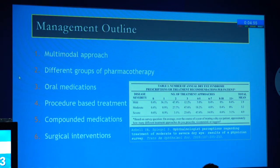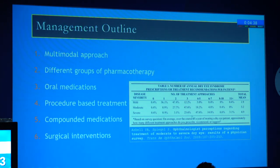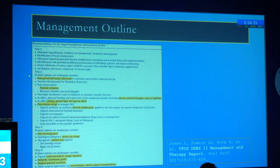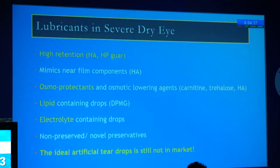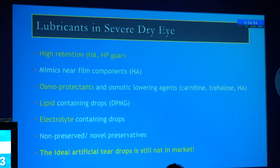Severe dry eye requires a multimodal approach. From a US survey, more than 50% of severe dry eye patients require more than four or five different modalities. There are different groups: pharmacotherapy, oral medications, procedures, devices, compounded medications, and surgical interventions. Start with lubricants — something with higher retention like hyaluronate or HPMC. Osmol protectants definitely have a role. Lipid-containing drops are now available in our country. Electrolyte-containing drops are required to replenish what is lost. However, the ideal artificial tear drops to treat severe dry eye do not yet exist in the market. This is where topical immunosuppression has a role — usually starting with a short course of steroids, though in very severe situations they may be given over a prolonged period.